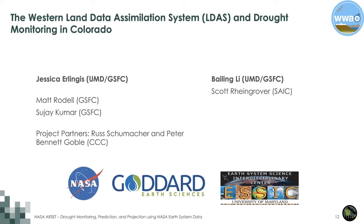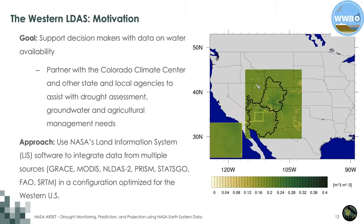The first project comes from the Colorado River Basin: the Western Land Data Assimilation, or Western LDAS, Drought Monitoring in Colorado. This project was led by researchers at the University of Maryland and NASA Goddard in partnership with the Colorado Climate Center. The goal was to support decision makers with data on water availability by partnering with the Colorado Climate Center and other state and local agencies to assist with drought assessment, groundwater, and agricultural management needs. The project applies NASA's Land Information System or LIS software to integrate data from multiple sources including GRACE Data, MODIS, NLDAS2, PRISM, STATSGO, FAO, and SRTM — all in a configuration optimized for the Western U.S.